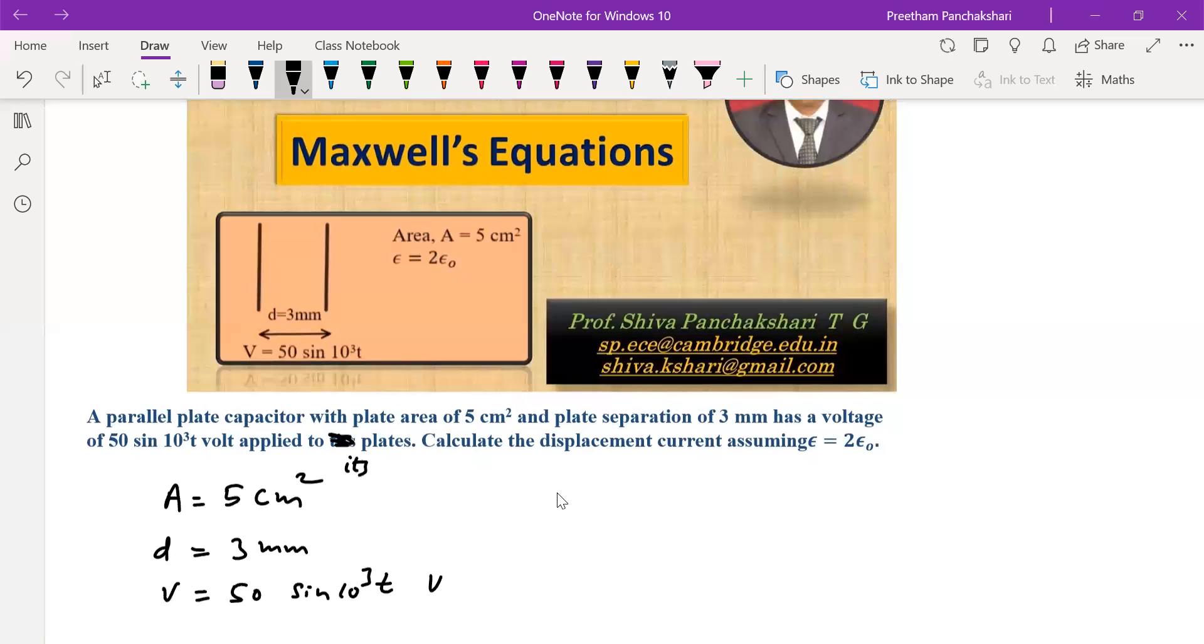Calculate the displacement current, that is I_D, if epsilon is equal to two epsilon naught.